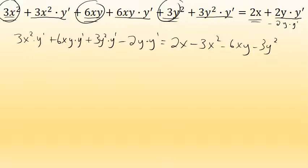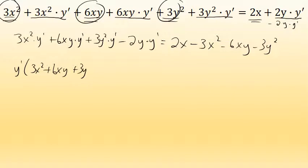At this point, the four terms on the left side all include a factor of y prime, so I factor that out to the front, resulting in y prime times the quantity 3x squared plus 6xy plus 3y squared minus 2y, and that equals the right side of the equation unchanged.